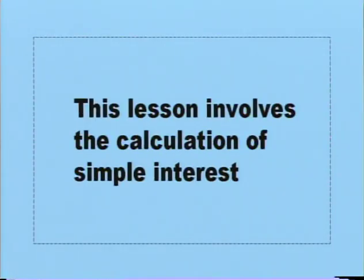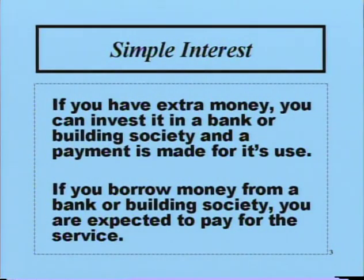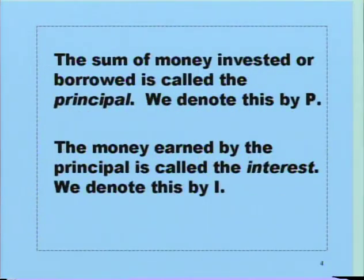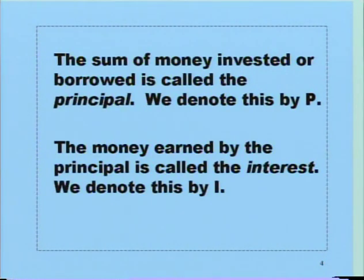This lesson involves the calculation of simple interest. If you have extra money, you can invest it in a bank or a building society and a payment is made for its use. If you borrow money from a bank or a building society, you are expected to pay for the service. The sum of money invested or borrowed is called the principal. We denote this by capital P. The money earned by the principal is called the interest. We denote this by a capital I.